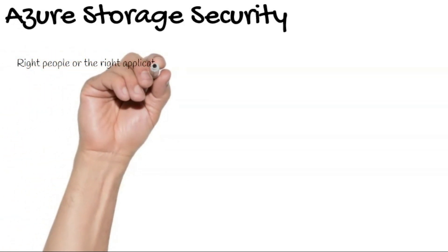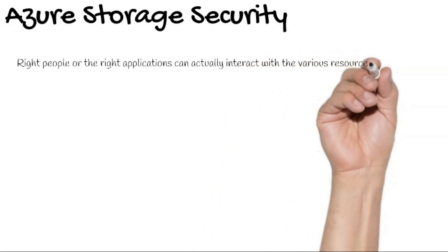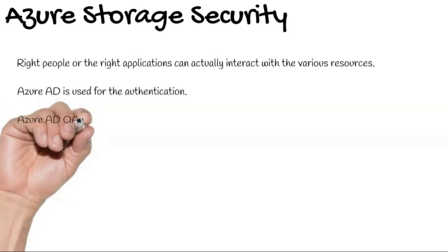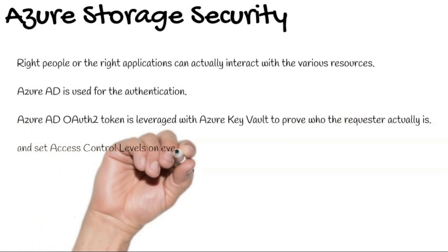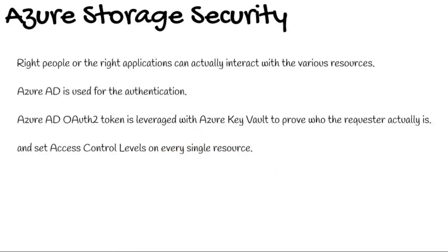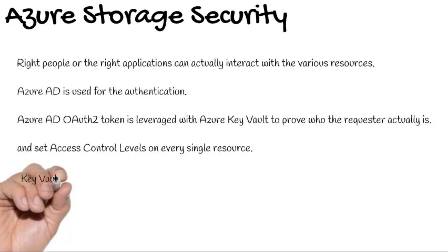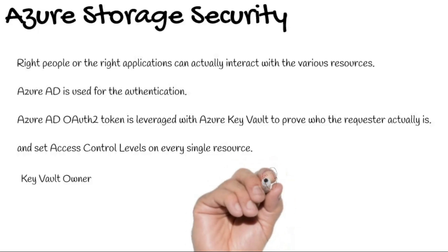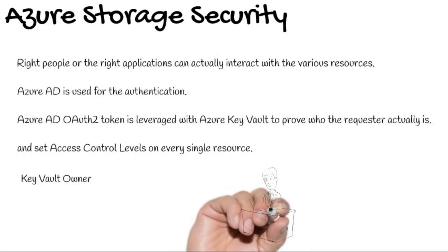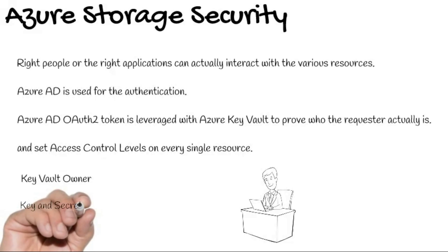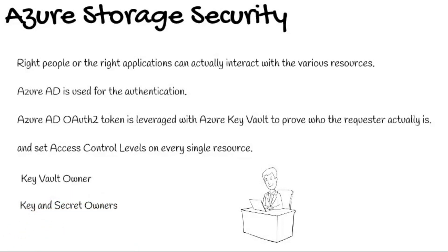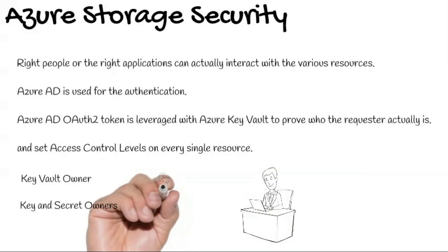Let's discuss authentication and authorization, which ensures that the right people or the right applications can interact with the various resources. Azure AD is used for authentication. Azure AD OAuth 2.0 tokens are leveraged with Azure Key Vault to prove who the requester is. Azure AD can set access control levels on every single resource. Regarding roles: a Key Vault Owner can create the vault and grant various people permissions to add and remove keys. A key and secret owner can create keys, secrets, and certificates, and can add applications into Azure AD.